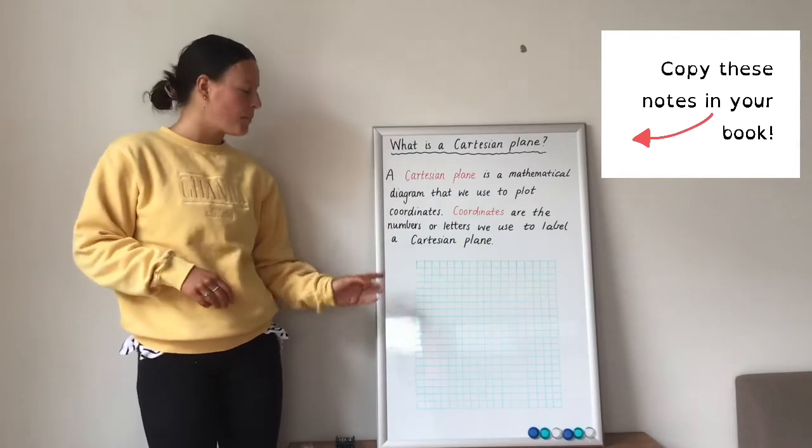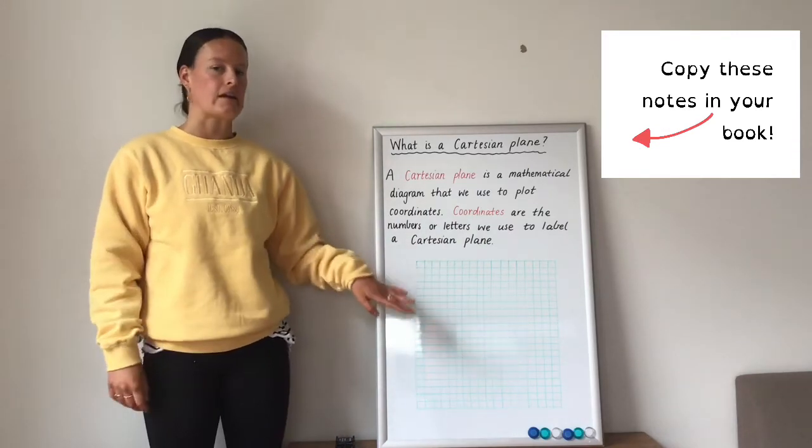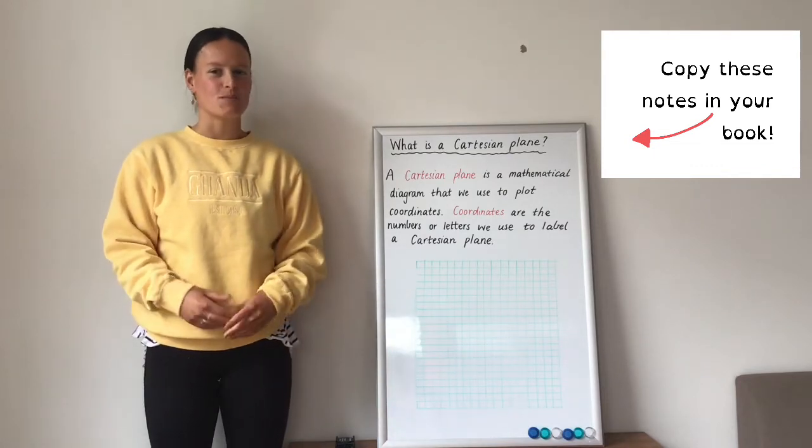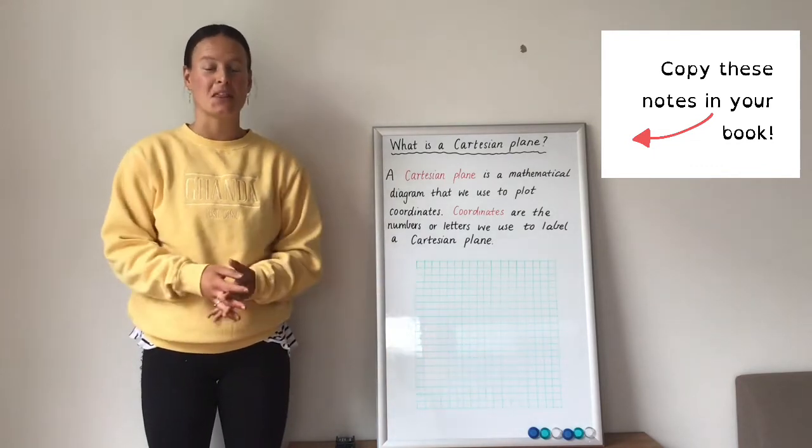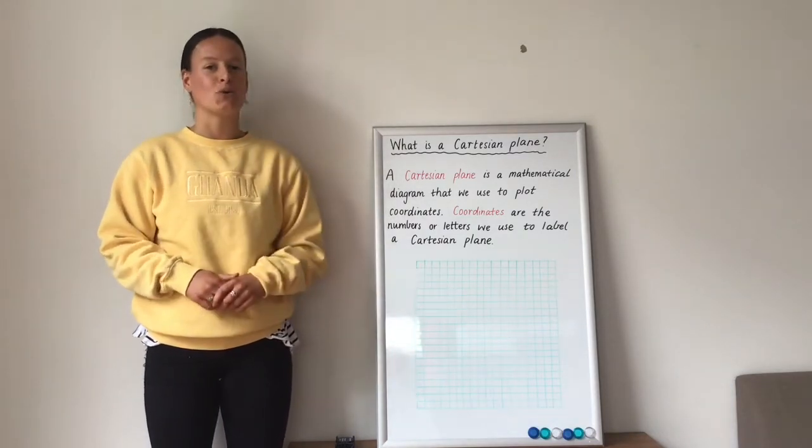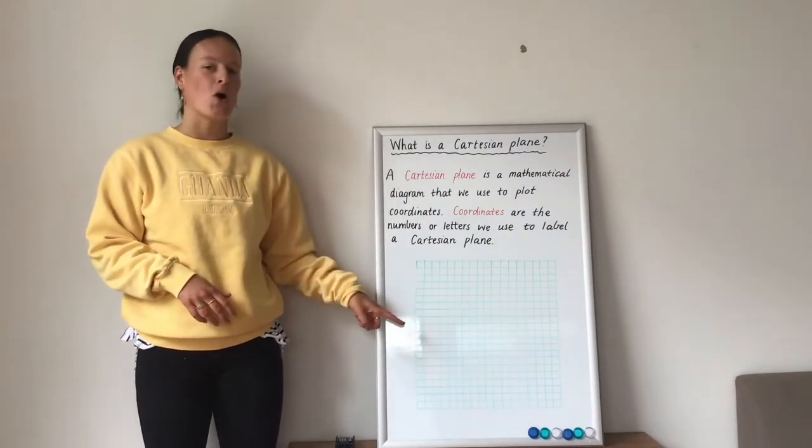So on my whiteboard, I have carefully ruled up a nice green grid here. You're lucky, you don't need to rule up any grids because your maths book is filled with grid paper. In a moment, I'm going to show how you draw up a Cartesian plane on my grid.